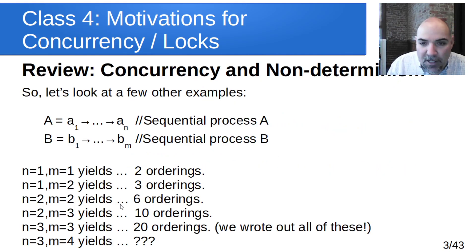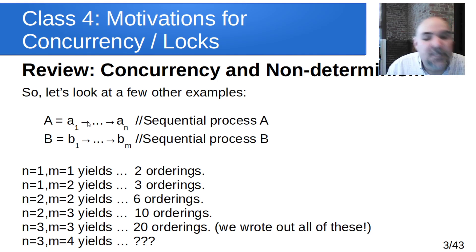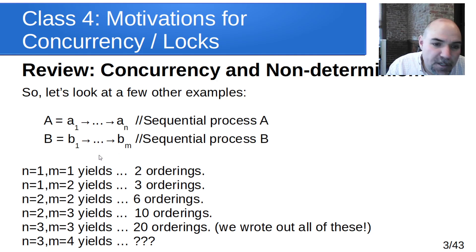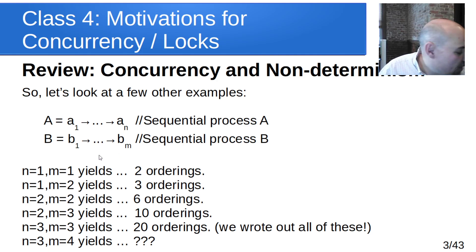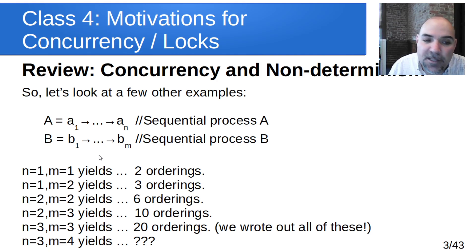A review of concurrency and non-determinism: we have two sequential processes A and B. A has N instructions, B has M instructions. We run them concurrently, meaning they're allowed to overlap. So what are all the possible orderings of those instructions we could get if those two processes are executed concurrently?